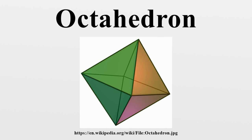Some better-known irregular octahedra include the following. Hexagonal prism: two faces are parallel regular hexagons, and six squares link corresponding pairs of hexagon edges. Heptagonal pyramid: one face is a heptagon and the remaining seven faces are triangles; it is not possible for all triangular faces to be equilateral. Truncated tetrahedron: the four faces from the tetrahedron are truncated to become regular hexagons, and there are four more equilateral triangle faces where each tetrahedron vertex was truncated. Tetragonal trapezohedron: the eight faces are congruent kites.